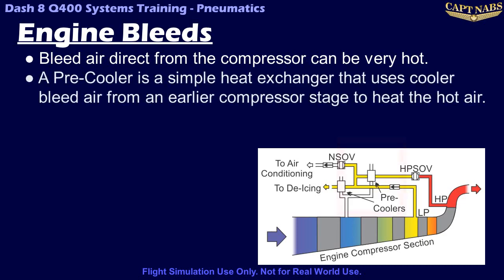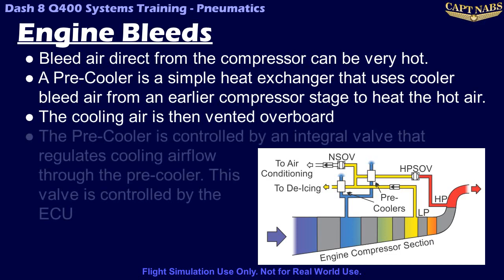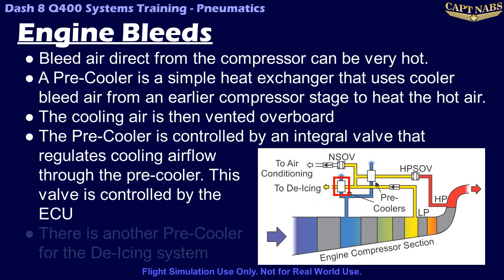The pre-cooler is a simple heat exchanger that takes air flow from an earlier stage in the compressor that is cooler and runs it over the hot air, thus cooling the hot air before it enters the aircraft systems. The cooling air is then vented overboard after it passes through the pre-cooler. The amount of cooling air passing through the pre-cooler is controlled by an integral valve within the cooler itself, which is controlled by the ECU. You'll also notice that there is another pre-cooler in the de-icing system. This ensures that air entering the de-icing system is cooled even further to ensure it is not damaging to any equipment in the de-icing system.